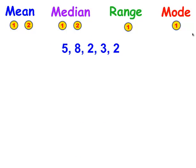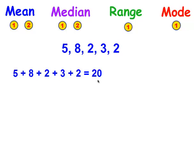Now we're going to try it with this set of data. To find the mean, the first thing you do is add up all the numbers and get the sum — the sum is 20. The second thing you do is take that 20 and divide it by how many numbers you added up. In this case it's 5 numbers, so 20 divided by 5, and the mean is 4.